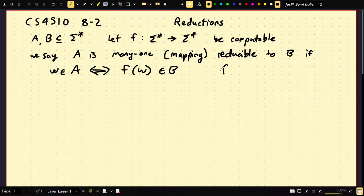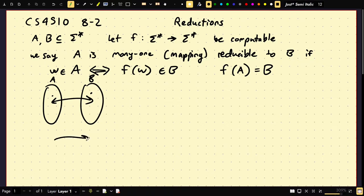Another way to think of this is that the image of the set is exactly B. So, Sipser has this picture, he's got like, this is A, and this is B. And F will map exactly something in A to something in B, and something not in A to something not in B.